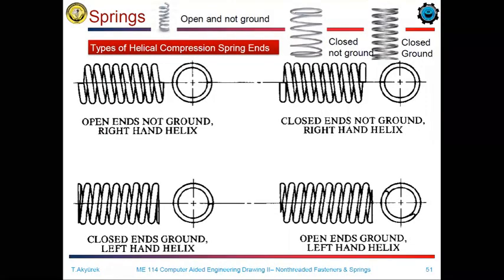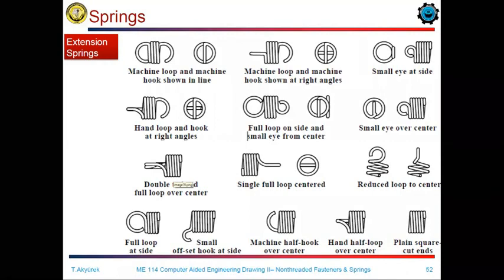If the ends of the helical compression springs are ground — in other words, flattened — they are mostly used to store energy in mechanical systems and isolate vibration from the foundation. The ending part of the springs is not evaluated in force calculations; it is only used for installation purposes.